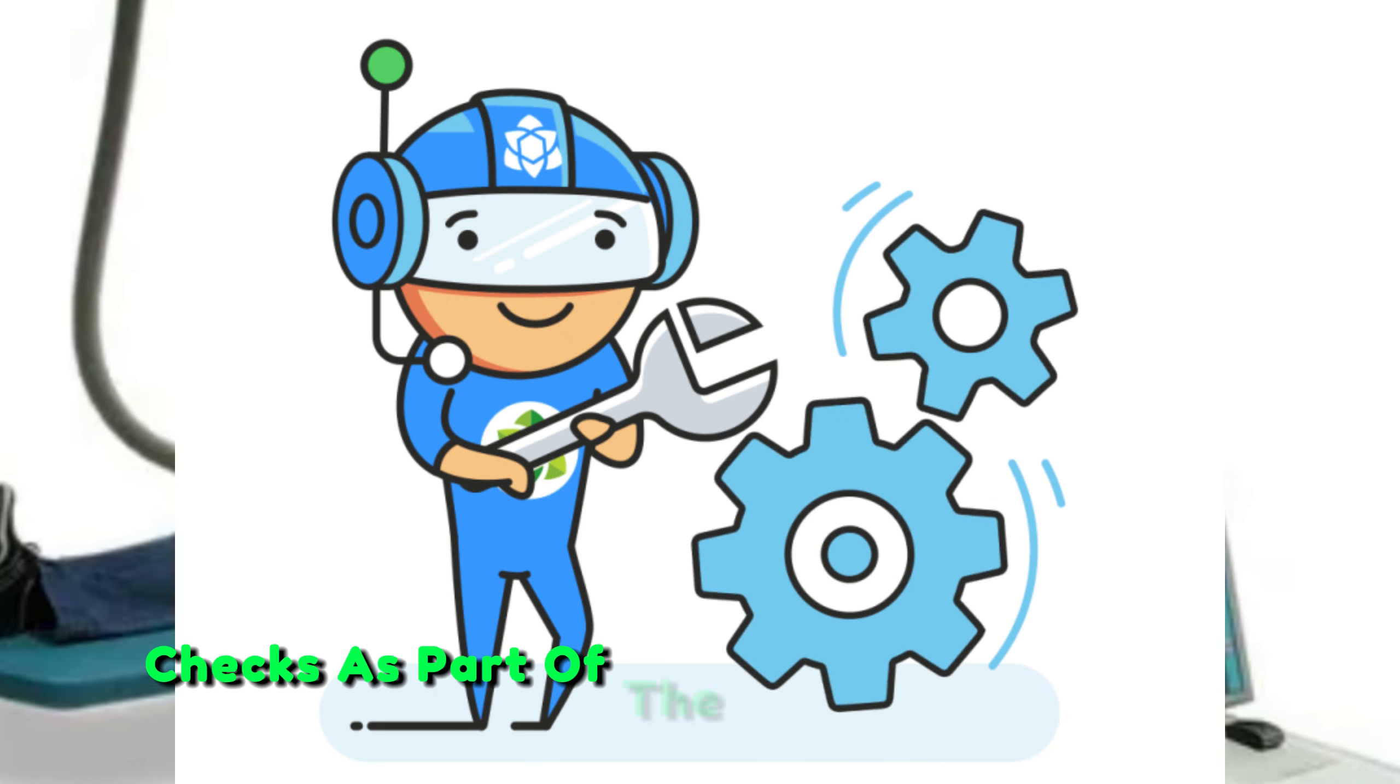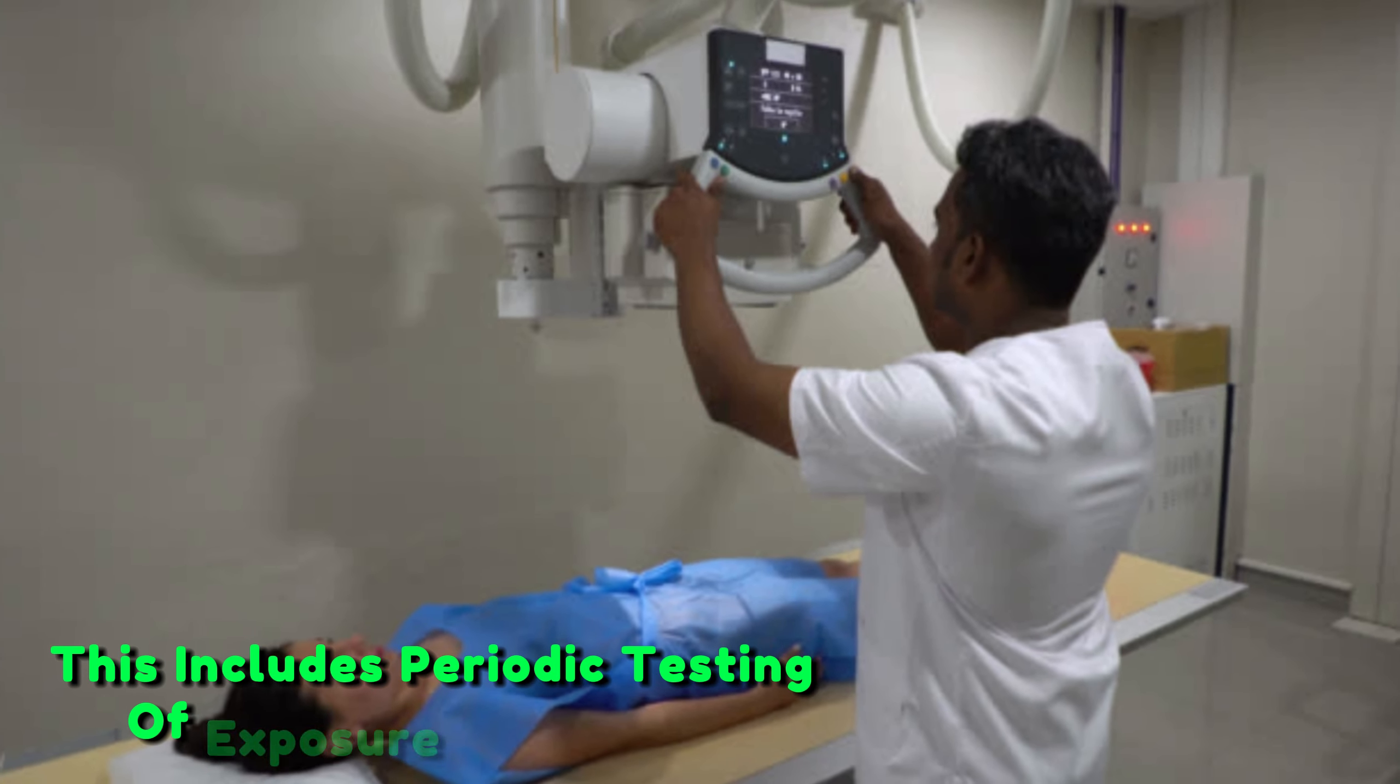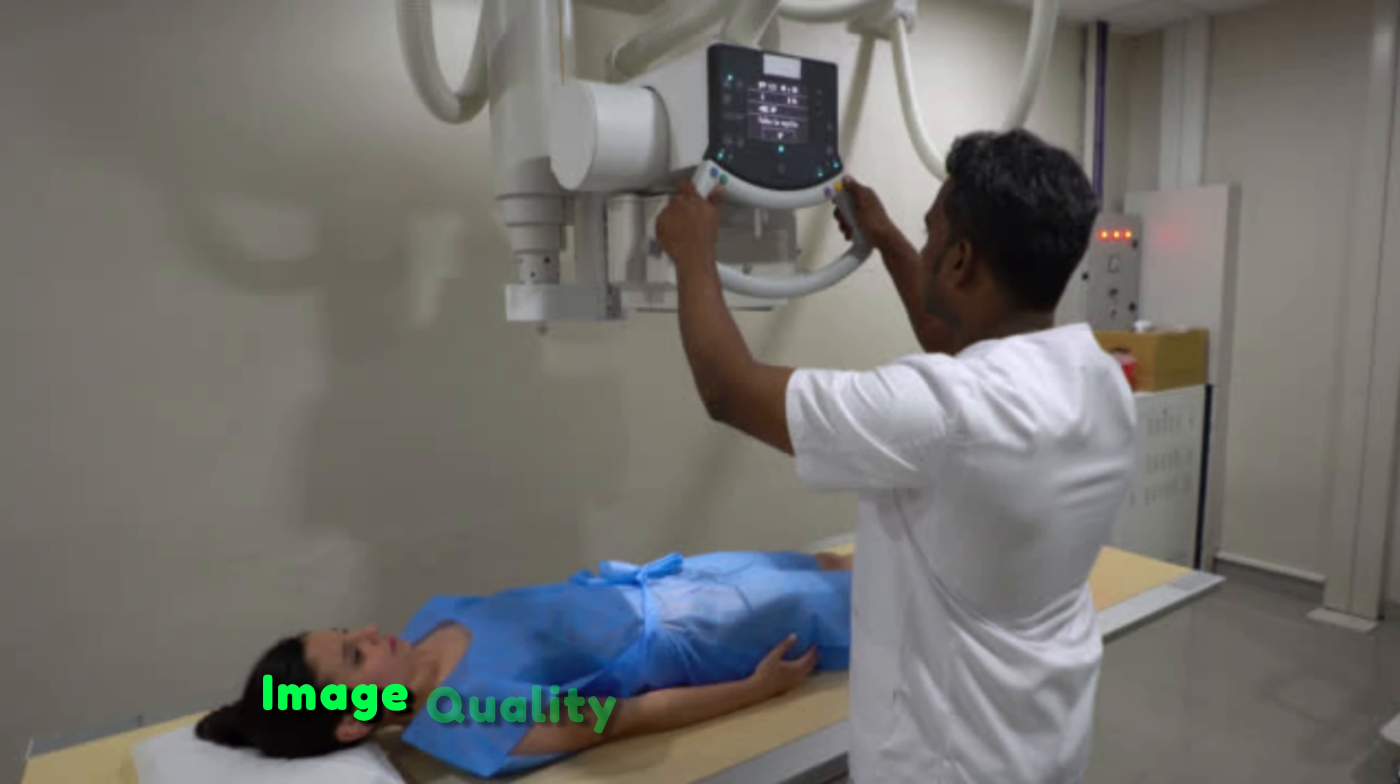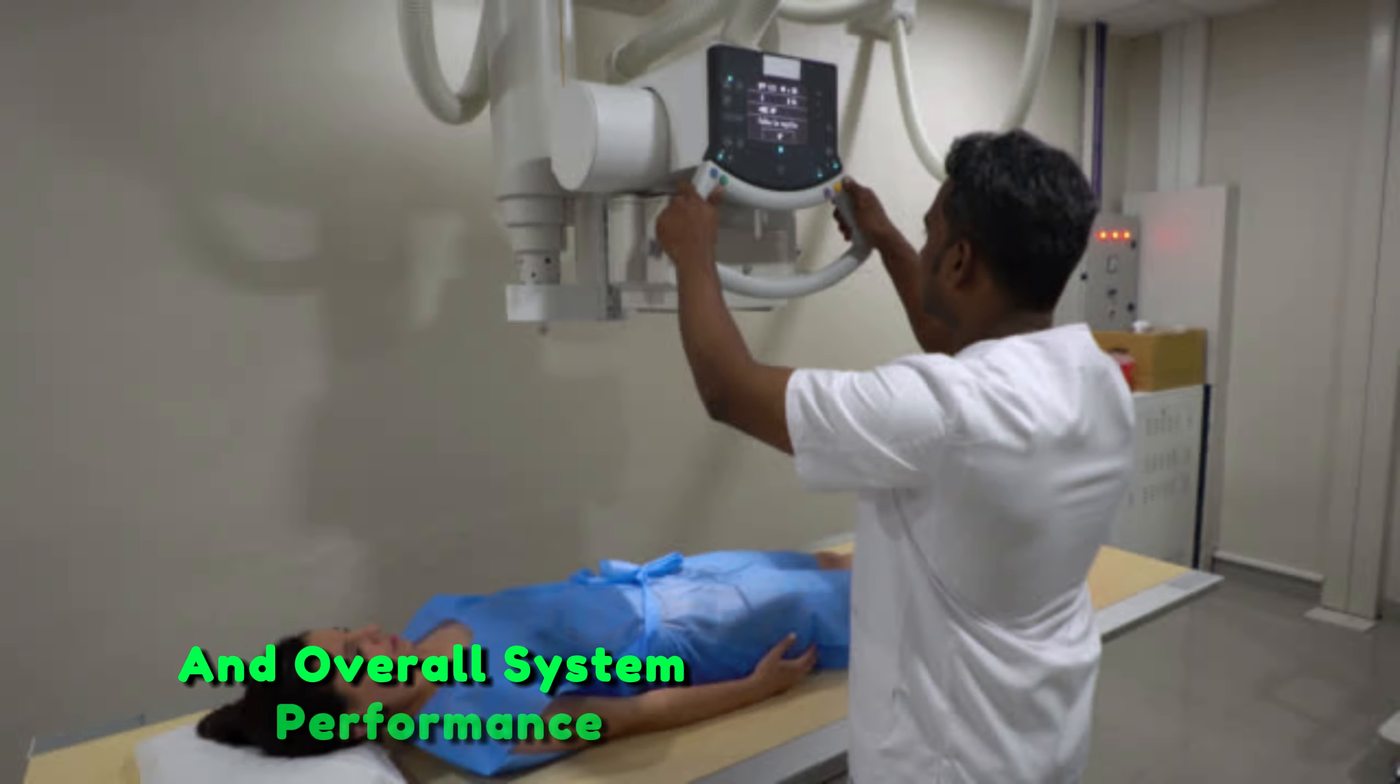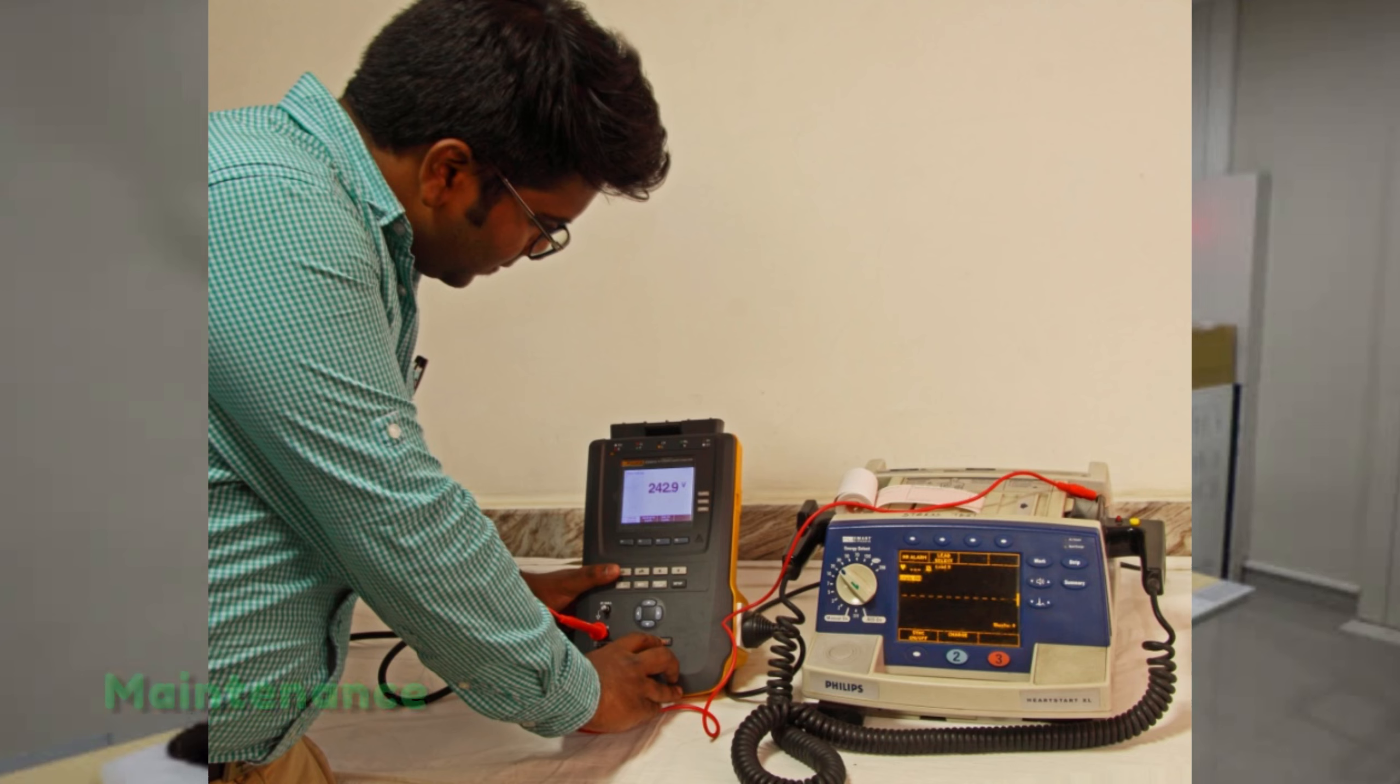Quality assurance checks. Implement routine quality assurance checks as part of the maintenance program. This includes periodic testing of exposure parameters, image quality, and overall system performance.